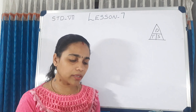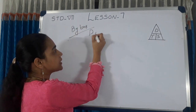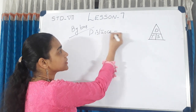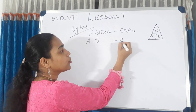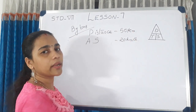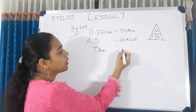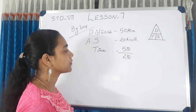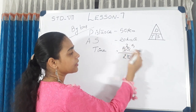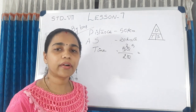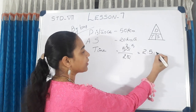She has to travel 50 km by bus. The distance of the bus journey is 50 km and the average speed is 20 km per hour. Time for bus = 50 divided by 20 = 2.5 hours.